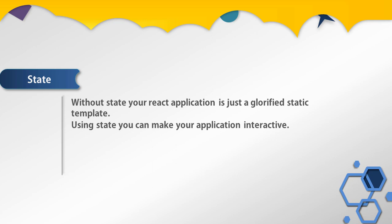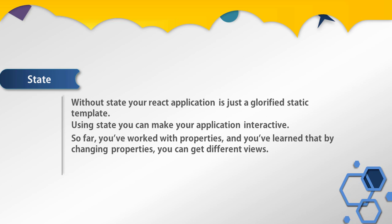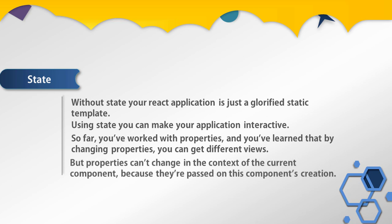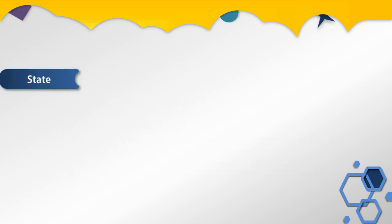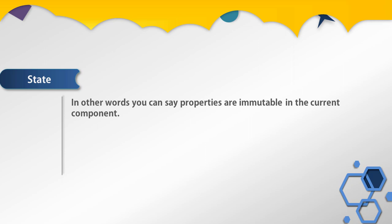Understanding state will help you build interesting applications. Imagine you are building an autocomplete input text box — when you type in it, you want to make a request to the server to fetch information about matches to show on the web page. So far you have worked with properties, and you have learned that by changing properties you can get different views. But properties can't change in the context of the current component because they are passed on component creation — in other words, properties are immutable in the current component.